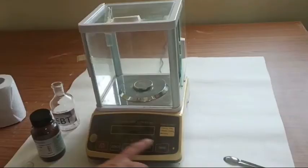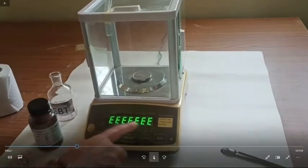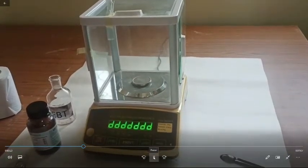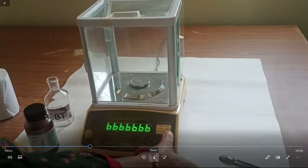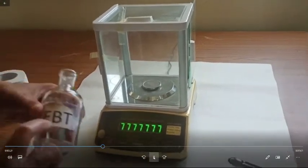Here is our electronic balance. So first let's put on the power button of this electronic balance. This is initializing first. These are the capacity, least count, and the weight is measured in grams.